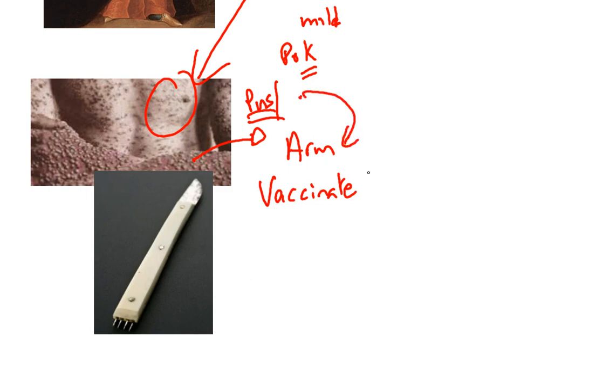The consequence of which was that the person who had the smallpox rubbed into their wound would then undertake what we have learned is called a primary response.